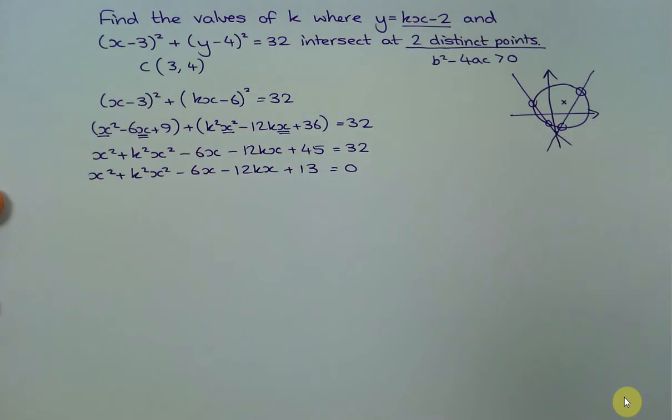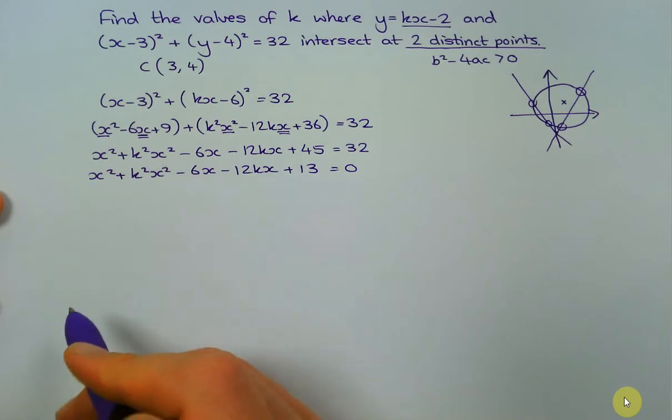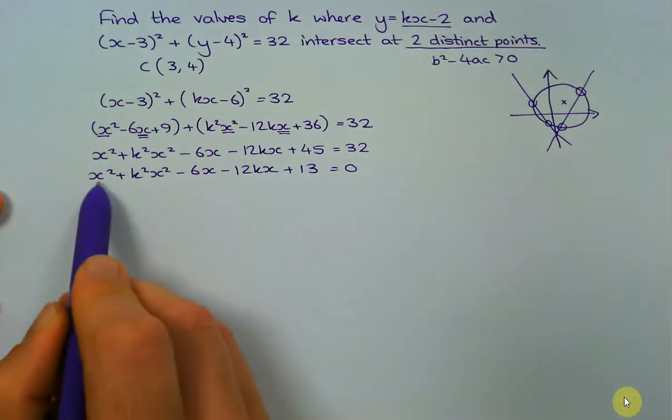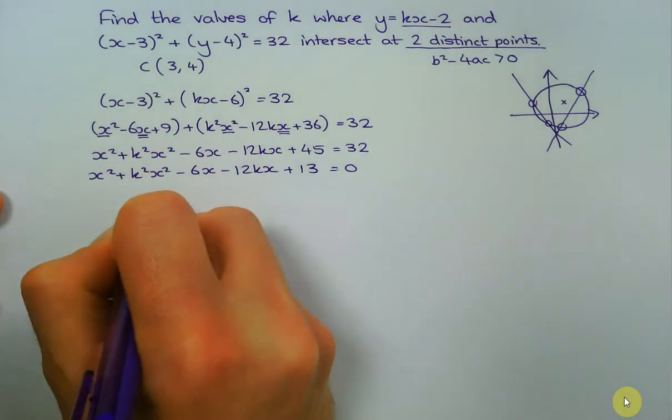Okay, so b... but that's pretty confusing there, this part here, because I've got two terms with an x. Likewise the a is pretty confusing, so I've got two terms with an x². So the best thing to do is we're going to factorize for x².